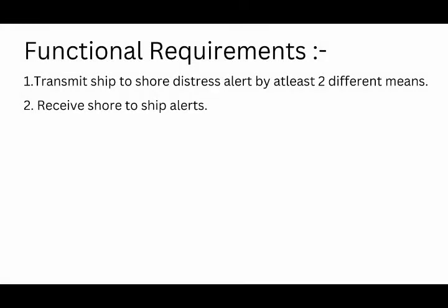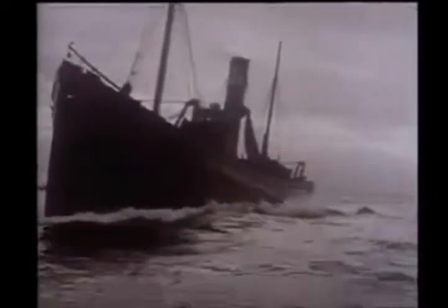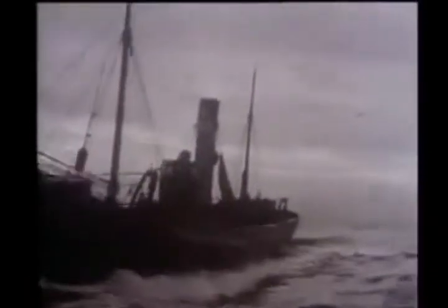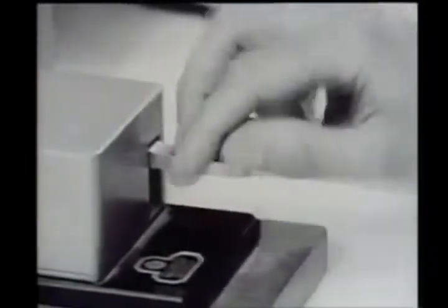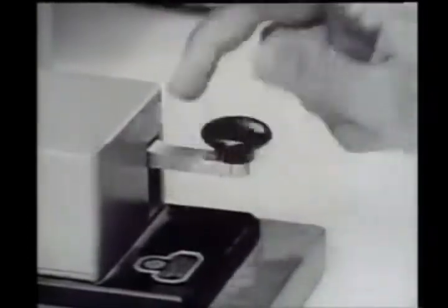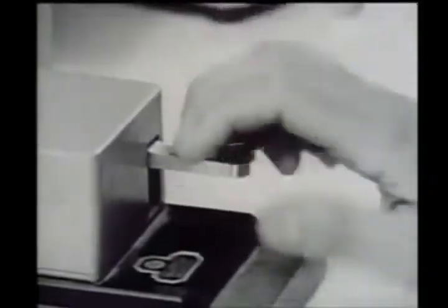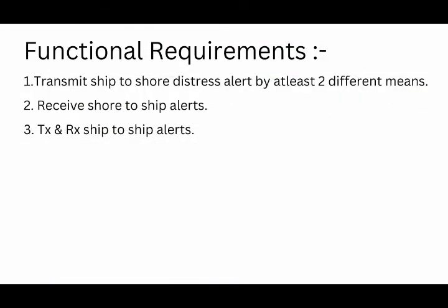Point number two: receiving shore-to-ship distress alerts. On board ships we receive direct broadcasts from shore-based rescue coordination centres using digital selective calling, which operates on VHF and MF/HF frequency bands. We also receive alerts from weather observation stations such as maritime safety information using either NAVTEX or SafetyNET, etc.